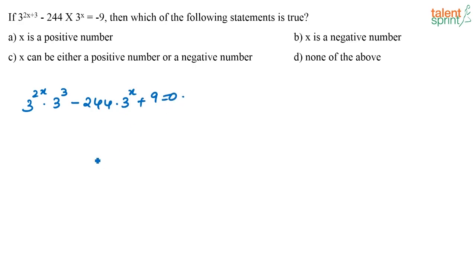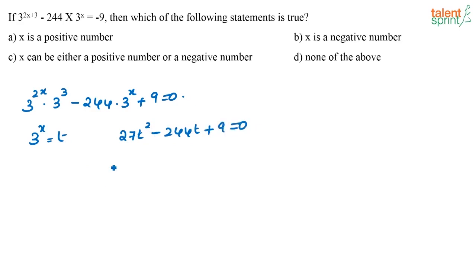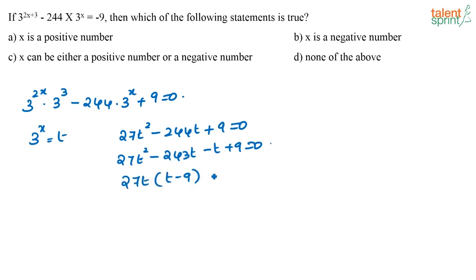If I take 3 to the power x equal to t, I can write this expression as 27t squared minus 244t plus 9 equals 0, or 27t squared minus 243t minus t plus 9 equals 0. Basically I am trying to find the factors. So I have 27t into t minus 9, minus 1 into t minus 9, equals 0.